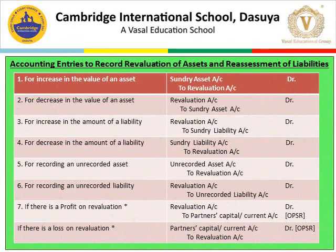Here are the accounting entries to record revaluation of assets and liabilities. Number one: for increase in the value of assets, the entry is sundry assets account debit to revaluation account. When there is a profit we write revaluation on the credit side; when there is a loss we write revaluation on the debit side. We have to keep this in mind while passing journal entries.